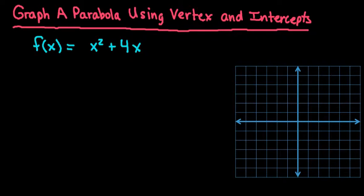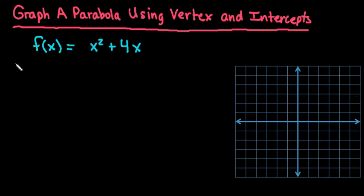The first thing you want to look at when you have a parabola is whether your graph opens up or down. You can tell this by looking at the value in front of the x squared. If it's positive, it opens up; if it's negative, it opens down. This one is going to open up, which tells us we will have a minimum point.